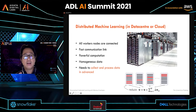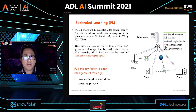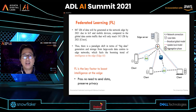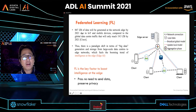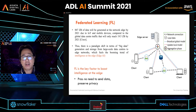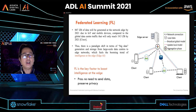Nowadays, a problem arises: there are billions of IoT and mobile devices that generate a zillion bytes of data. According to Cisco, the data generated by 2021 at the network edge by IoT and mobile devices will surpass the amount of data exchanged globally through data centers. Therefore, there is a paradigm shift in big data generation and storage from large-scale data centers to the edge network, fueling the booming trend of intelligence at the edge, or edge AI.